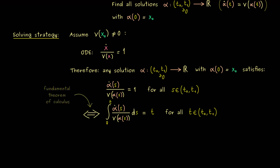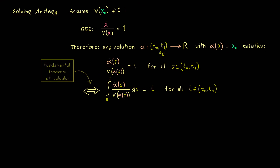This is a very important result needed to solve ordinary differential equations — please check out the real analysis series for a proof. Moreover, we can use the substitution rule to solve the integral on the left. We introduce a new variable x for alpha of s, so informally dx equals alpha-dot of s ds. These two quantities are exactly what we substitute inside the integral.